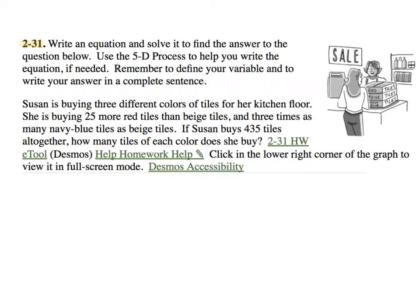So in this word problem, we need to analyze the words being used. We know there are three different colors and together the tiles are 435. However, when she buys, we're comparing. For example, it says 25 more red tiles than beige tiles. So this is comparing the beige with the red, and we could write an expression for that.